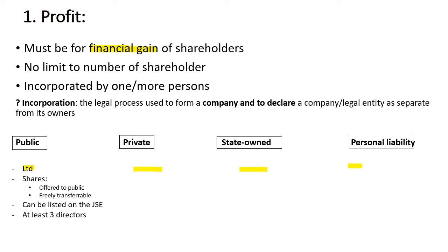A public company has the abbreviation LTD — standing for limited — at the end of its name. In a public company, shares are offered to the public and are freely transferable. A public company can also register on the stock exchange. In South Africa, we only have one stock exchange, namely the JSE — the Johannesburg Stock Exchange. For a public company, there needs to be at least three directors.